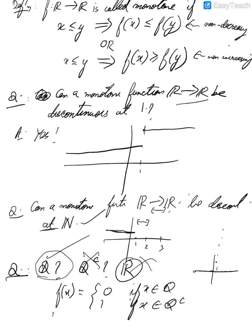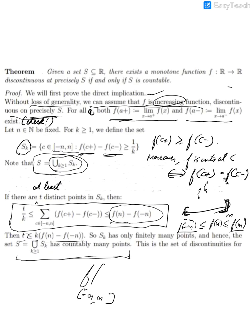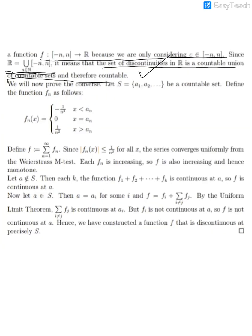From here we can now say that R and Q complement, you cannot have a monotone function which is discontinuous at precisely these points. But what about the rationals? We need to prove the converse: that if S is countable then there exists a monotone function f from R to R which is discontinuous at precisely S.